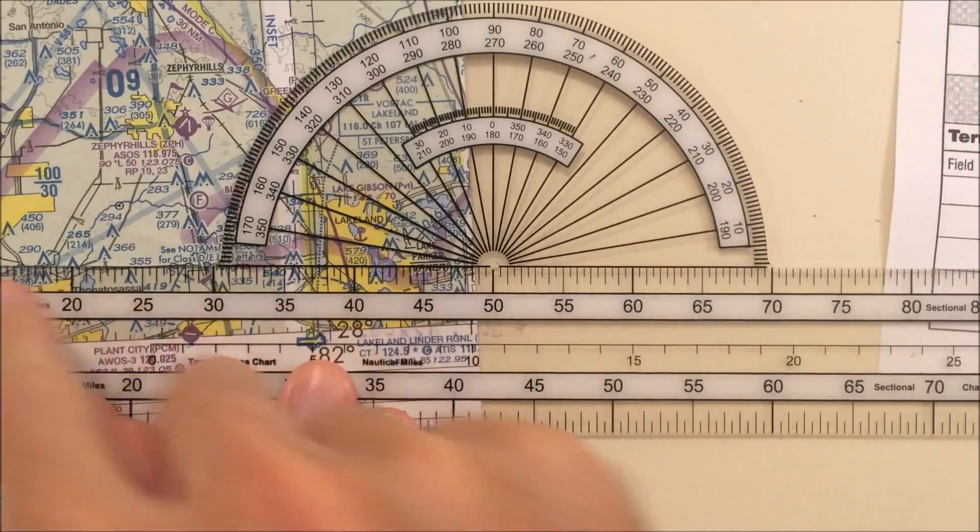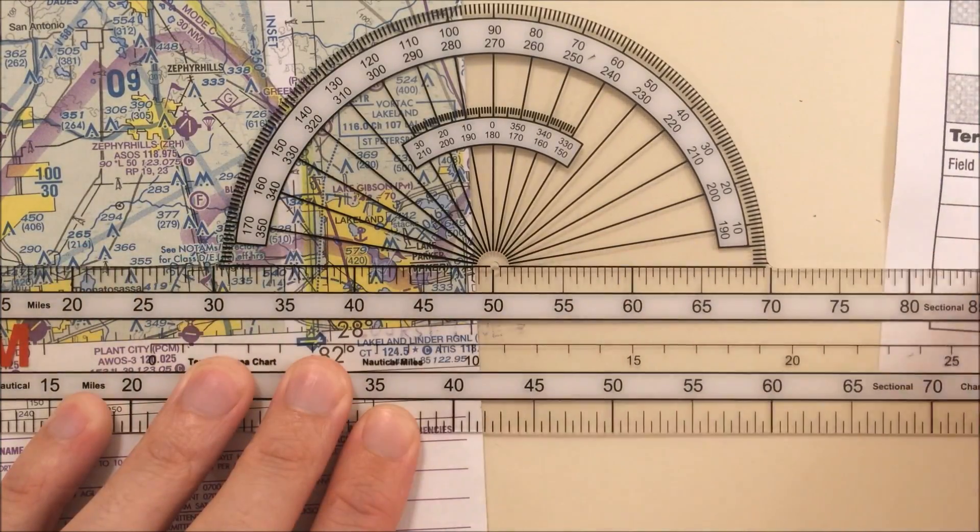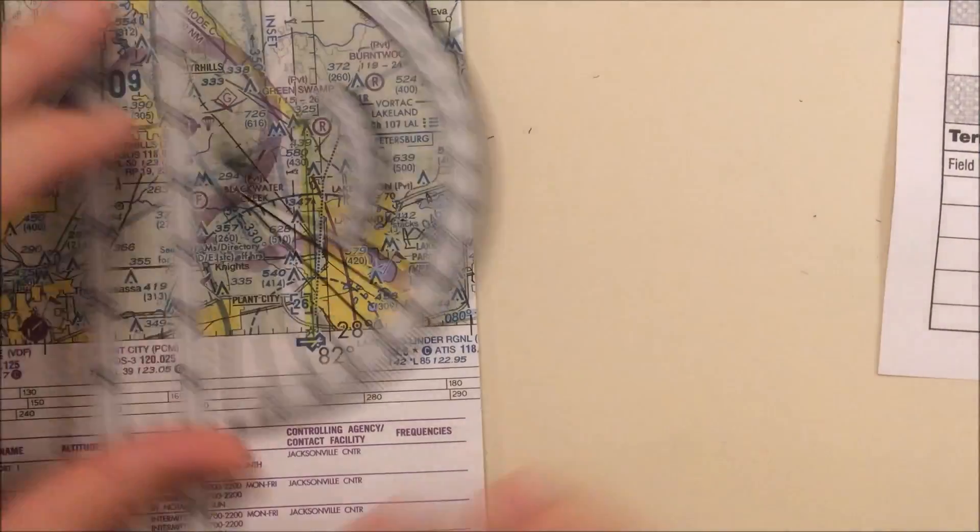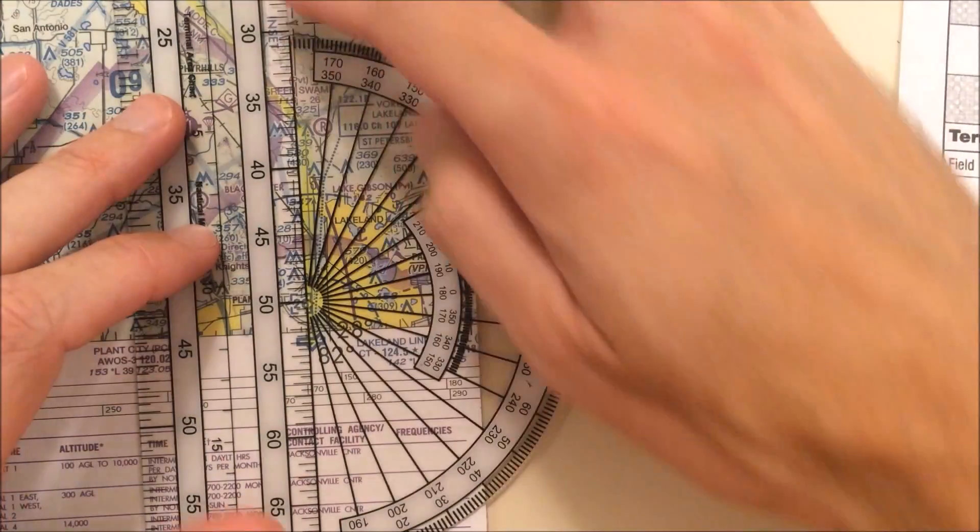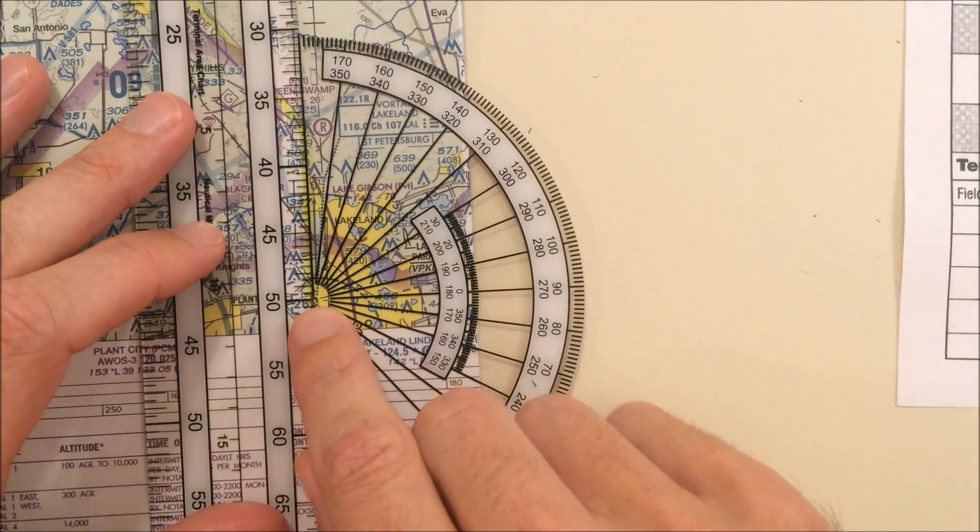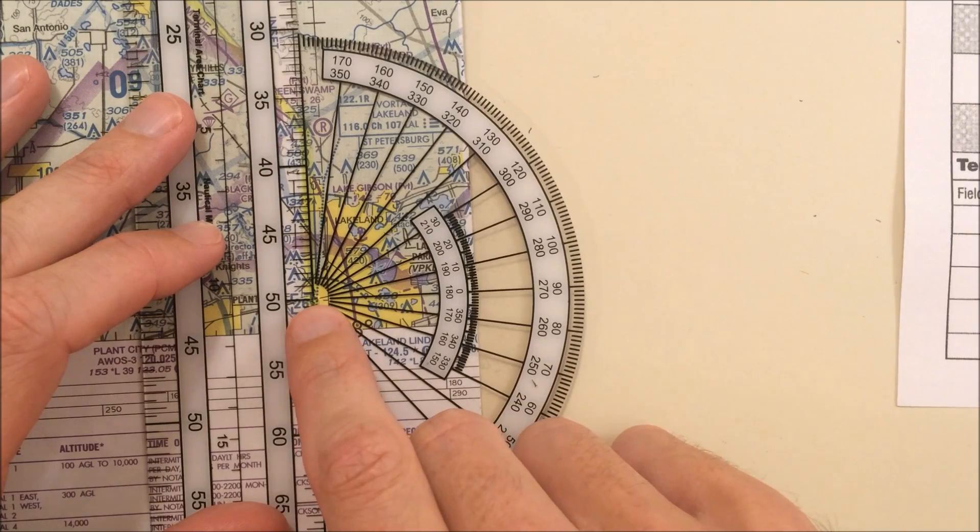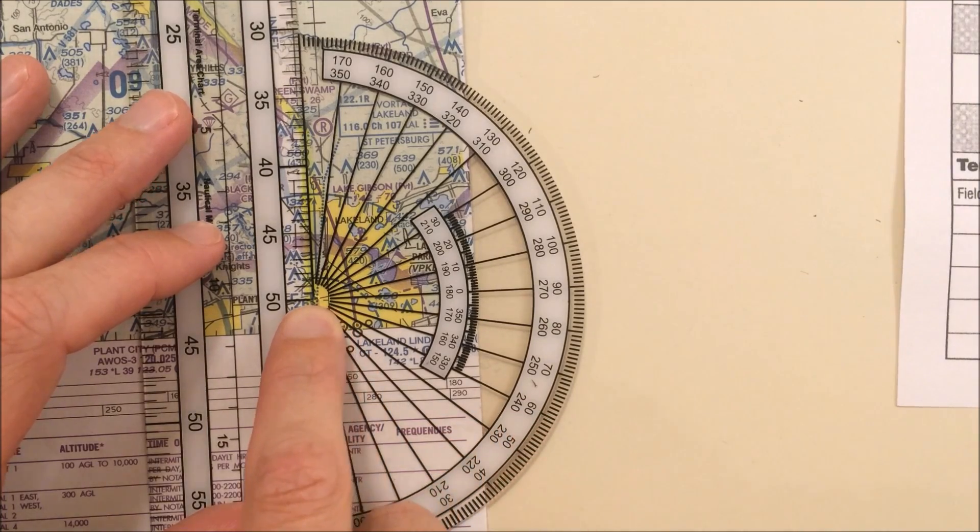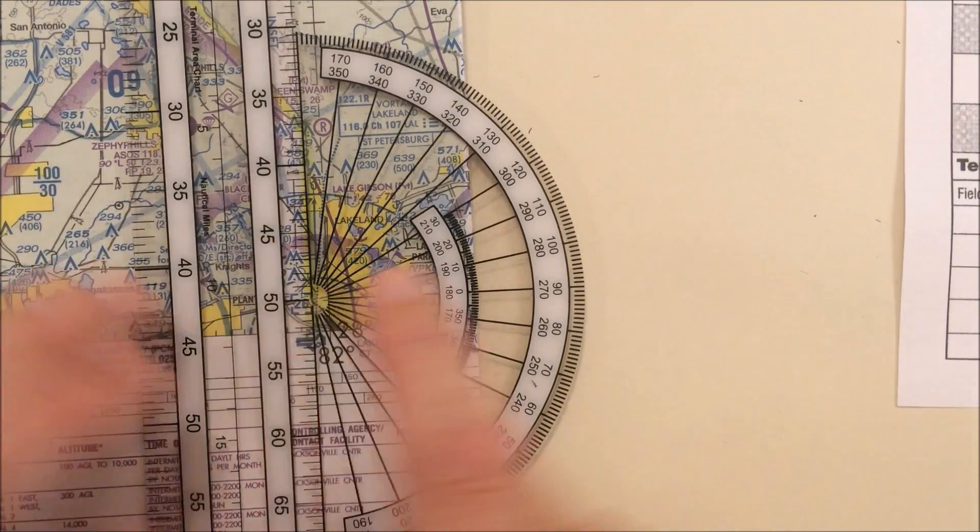Remember when you're using the plotter to line your course line up along this edge right here. So I can put my course line along this edge of the plotter, and then you need to find a line of longitude or latitude over which to put the center of the plotter, because that's what you're going to use to measure.